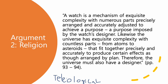It's called the teleological argument. The word teleology, or telos, means purpose or ends. Here's the argument: a watch is a mechanism of exquisite complexity with numerous parts precisely arranged and accurately adjusted to achieve a purpose — a purpose imposed by the watch's designer. Likewise, the universe has exquisite complexity with countless parts from atoms to asteroids that fit together precisely and accurately to produce certain effects, as though arranged by plan. Therefore, the universe must have a designer. You want to read it, understand it, identify the conclusion, identify the premises, and see what two things are being compared and what properties are attributed to each.